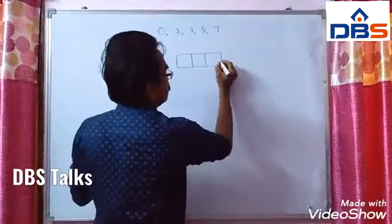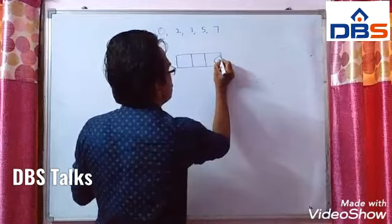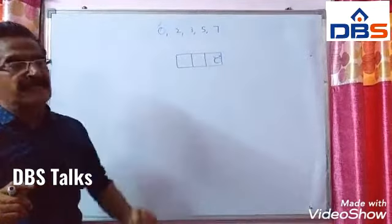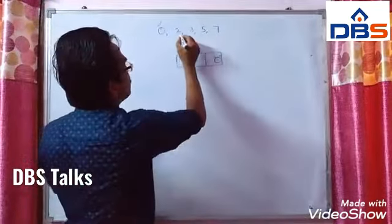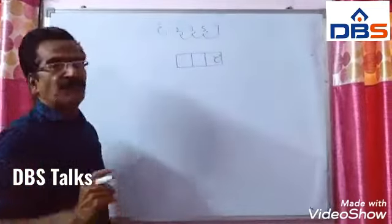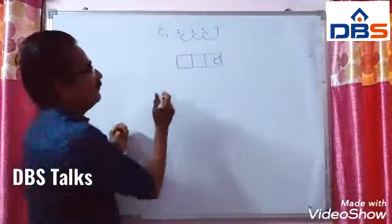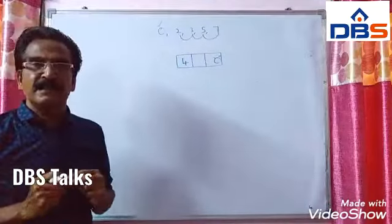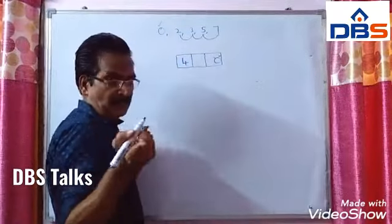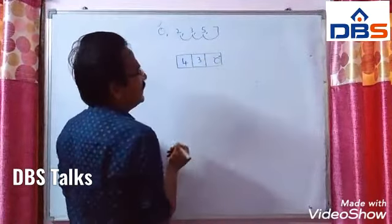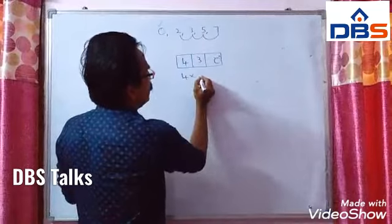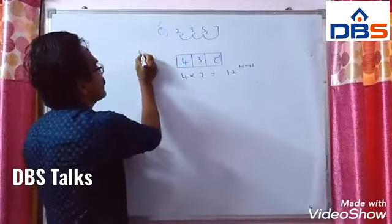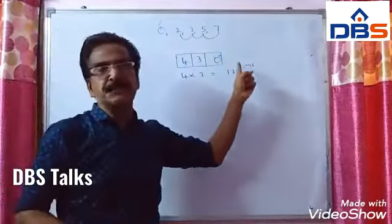Case 1: Place 0 in the unit's place. We are left with 4 digits. The first blank can be filled in 4 ways, and the second blank (since repetition is not allowed) in 3 ways. So 4 × 3 = 12 ways.